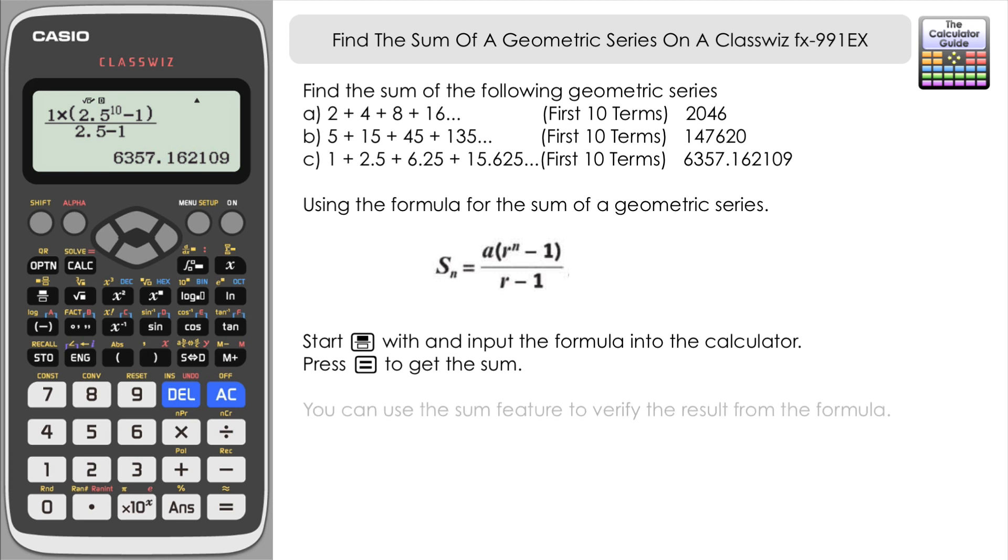Now what we can do just to verify that is use the sum feature on the ClassWiz just to check that we've used the formula correctly. Shift and then sum. And then remember A is 1. But I'm still going to input this just for good practice. 1 times. And then the ratio is 2.5. Power of x minus 1. And then remember it's 1 and 10. For this example sum of the first 10 terms. Press equals.